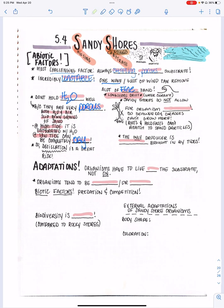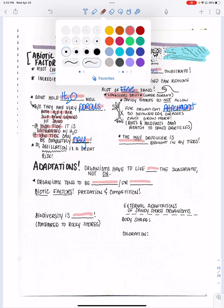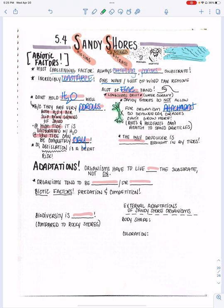The only producer on the sandy shore does not allow for organism attachment. Seaweeds and seagrasses cannot grow there because they need roots or a holdfast — neither works in shifting sand. This is the main cause of low biodiversity: if there's no food source, organisms won't be there. The only producer that can be there is phytoplankton, brought in by the tides.